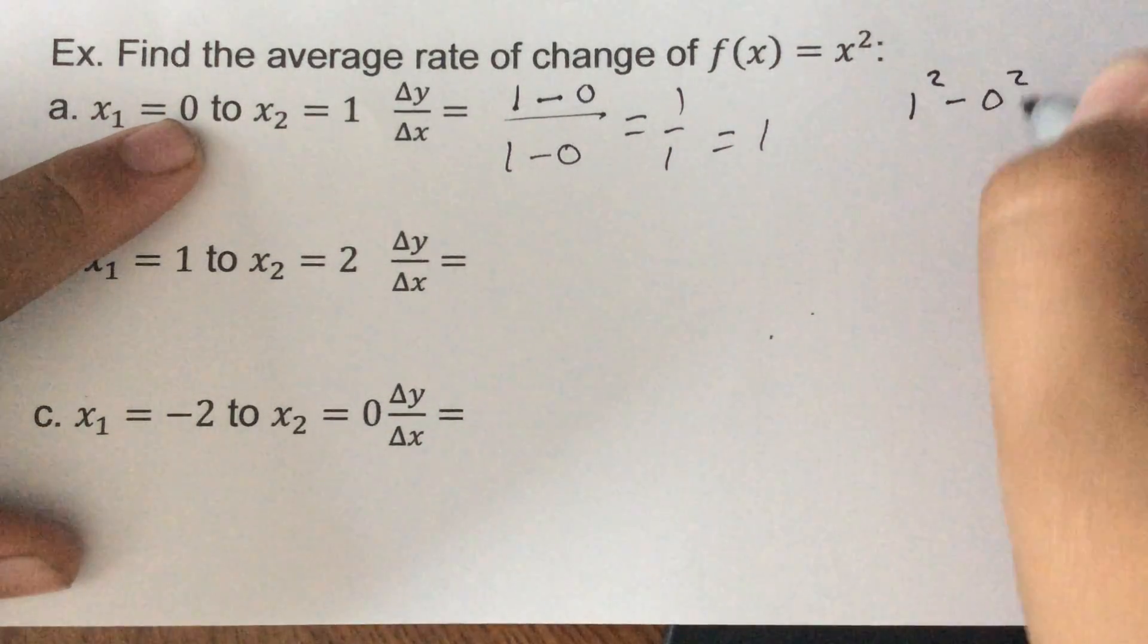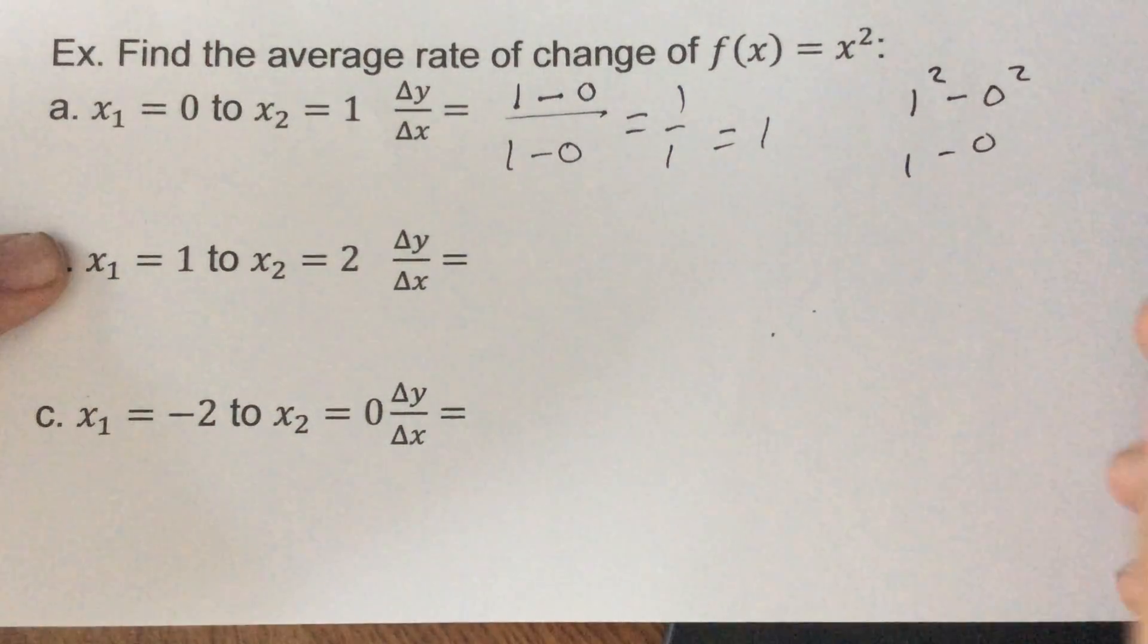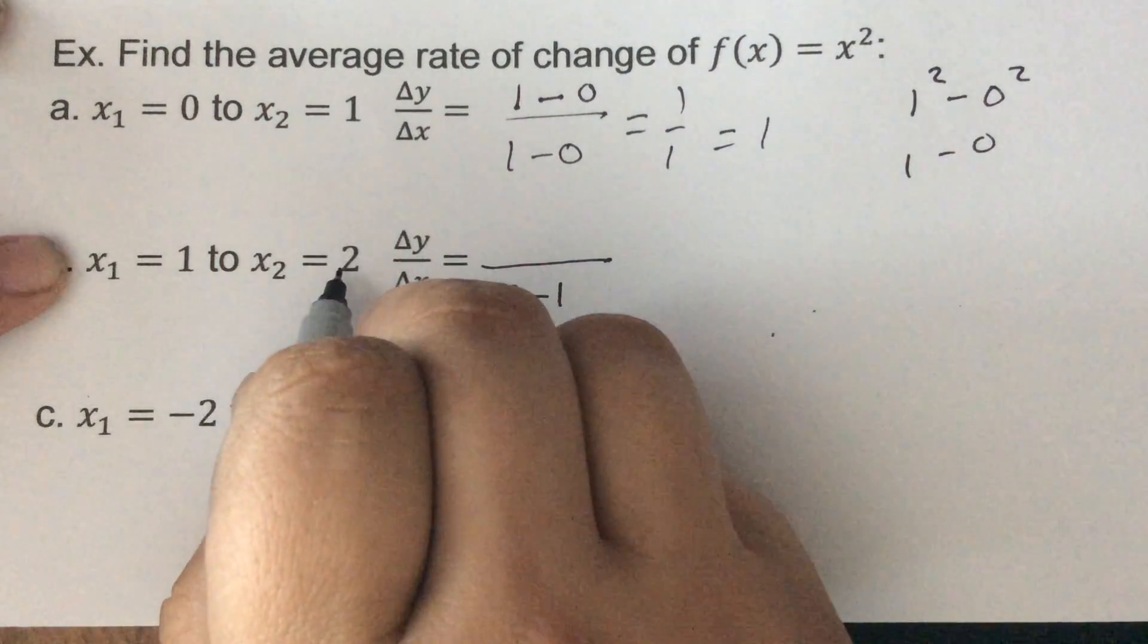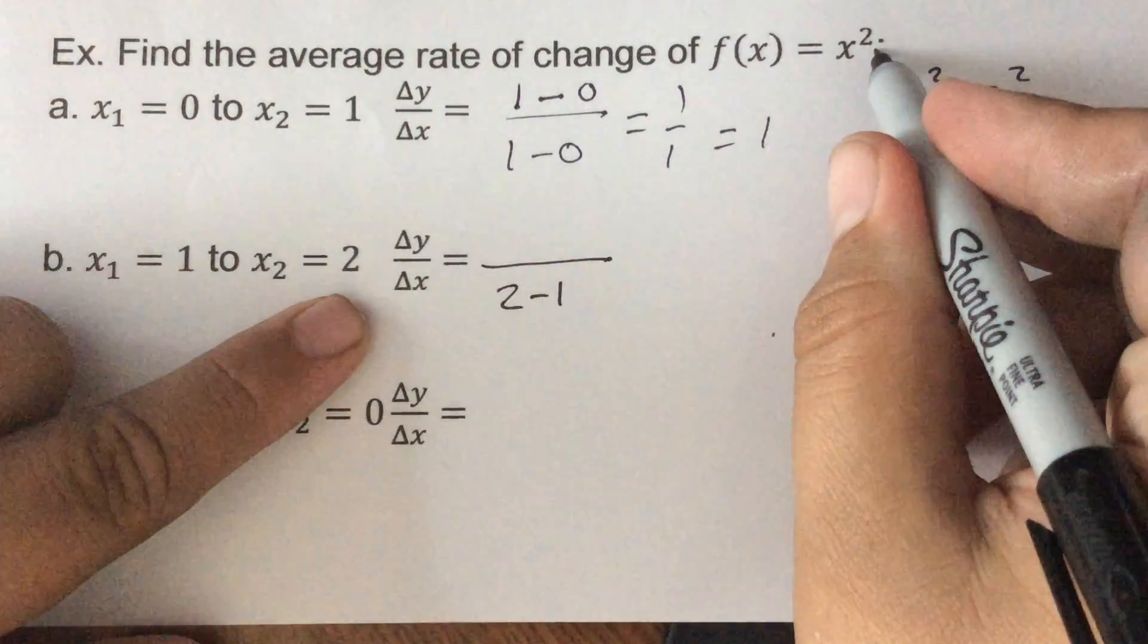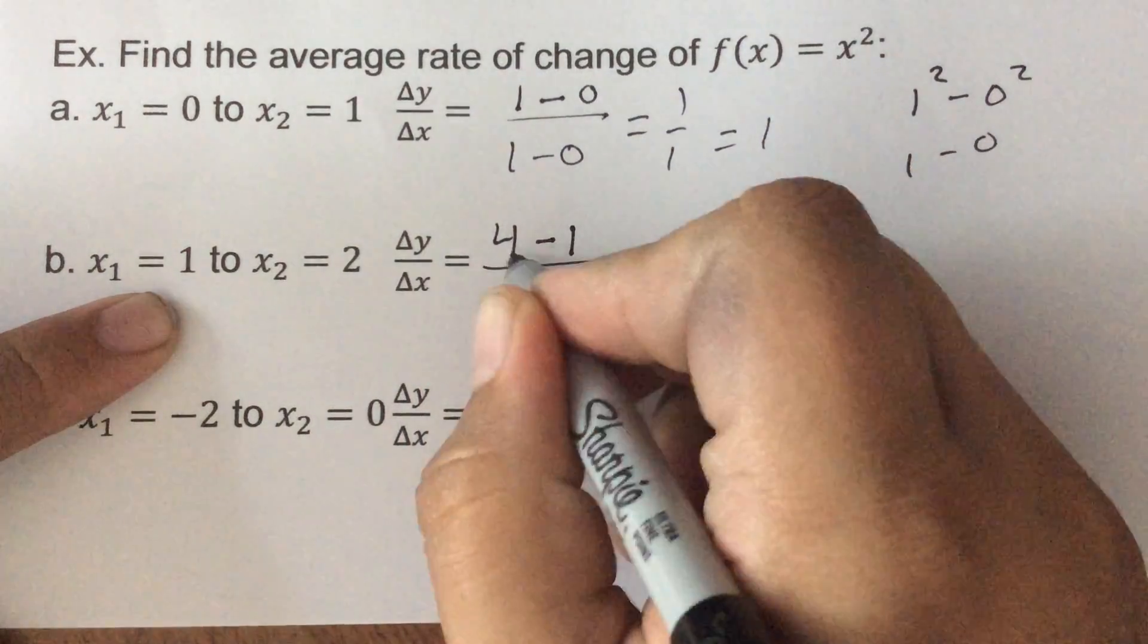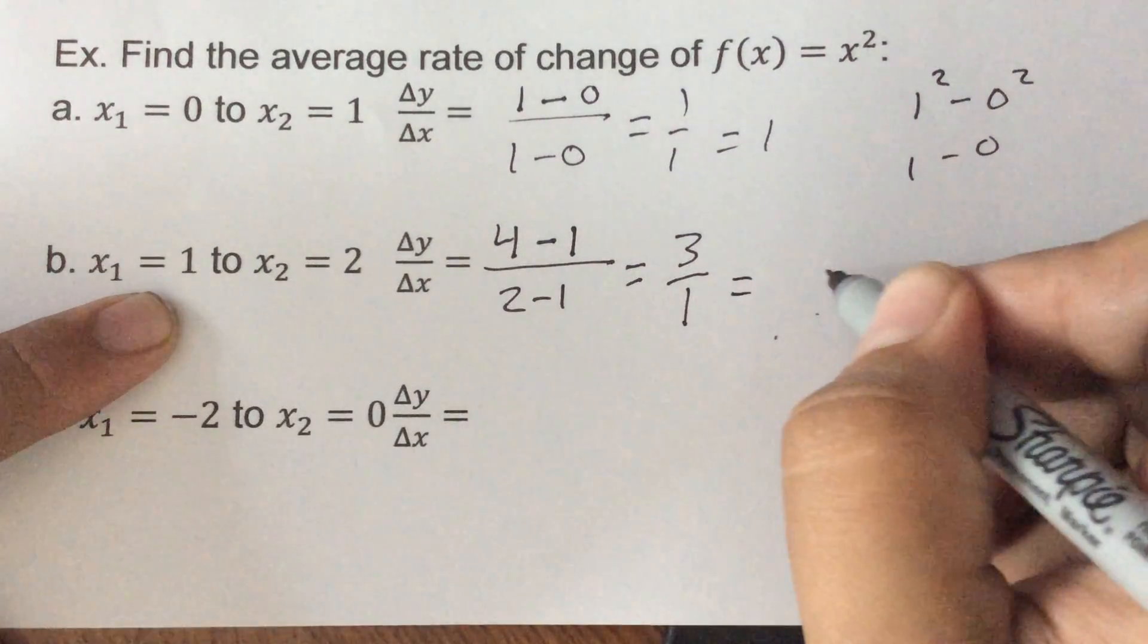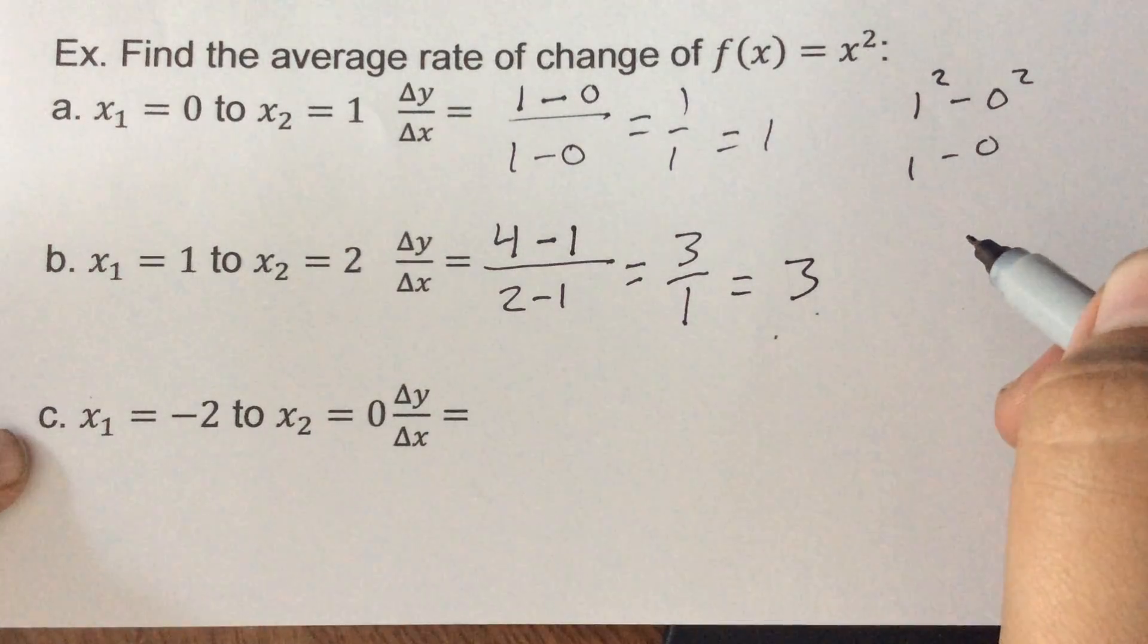Here now our bottoms would be two minus one, so the two x is subtracted. To get the top, two squared would be four, one squared we know is one. Four minus one is three, two minus one is one, so we get three then as our slope.